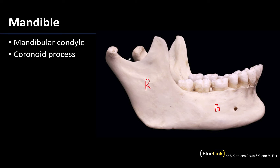On the superior portion of the ramus you're going to have two major projections. You will have the mandibular condyle — this whole area right here is called the condylar process — and then this portion right here that will actually articulate with the temporal bone is going to be the condyle.